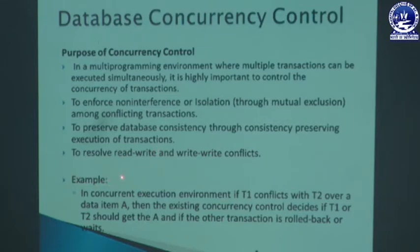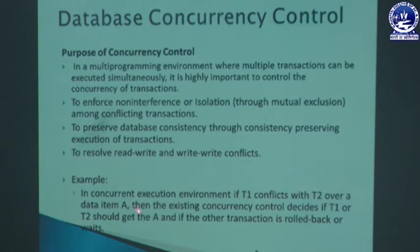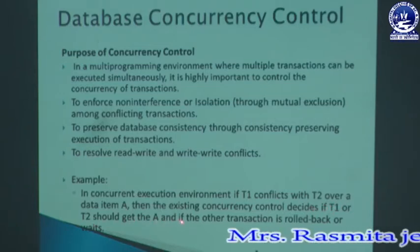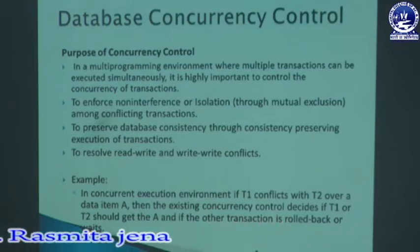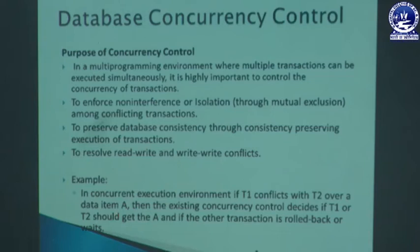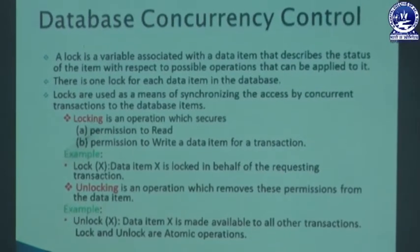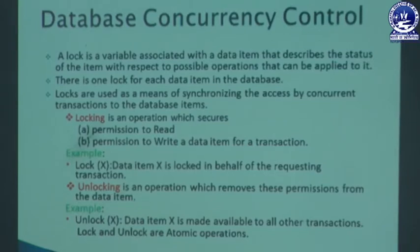This is one example of concurrent execution of transactions. Suppose we have two transactions T1 and T2. If T1 conflicts with T2 over data item A — meaning both T1 and T2 want to access data item A — there may be a conflict. The existing concurrency control technique decides if T1 or T2 should get A, and whether the other transaction should rollback or wait. We will discuss how to improve this using the locking technique.